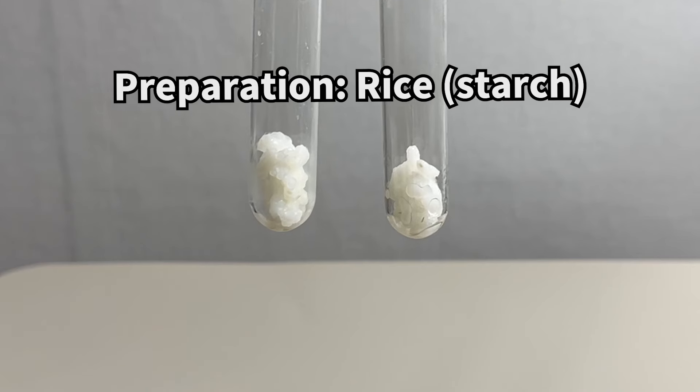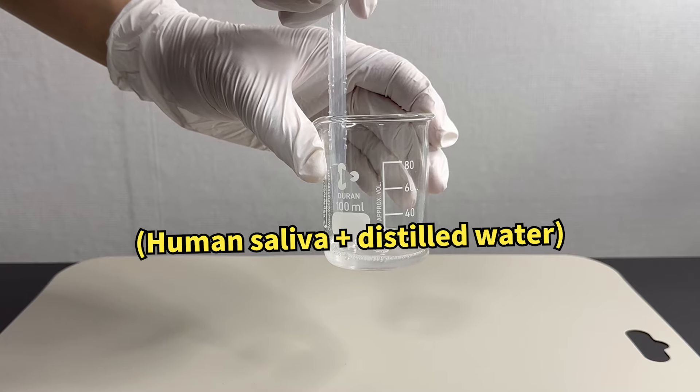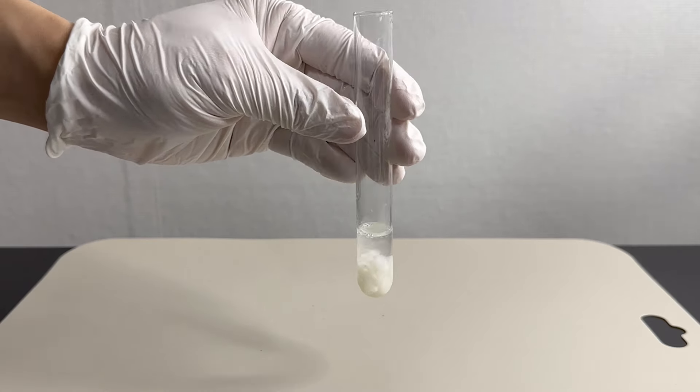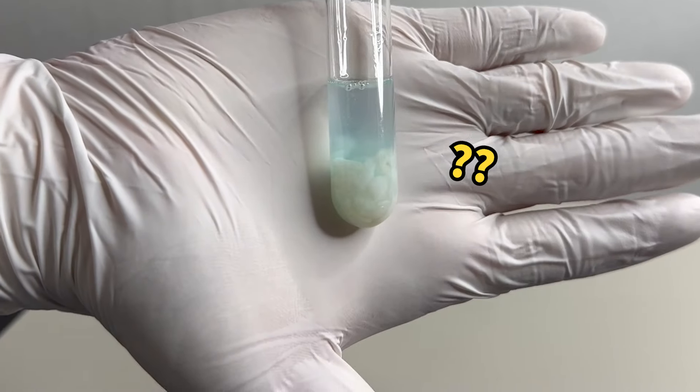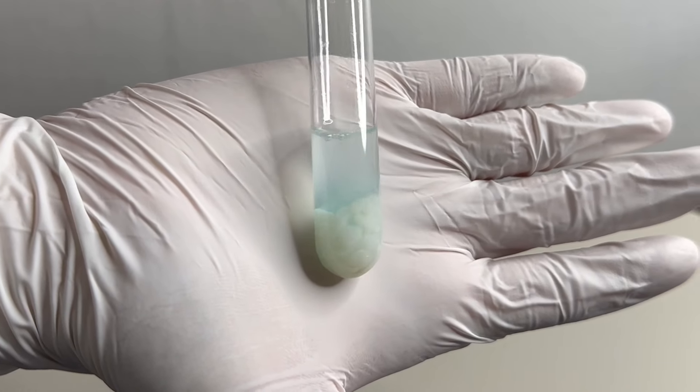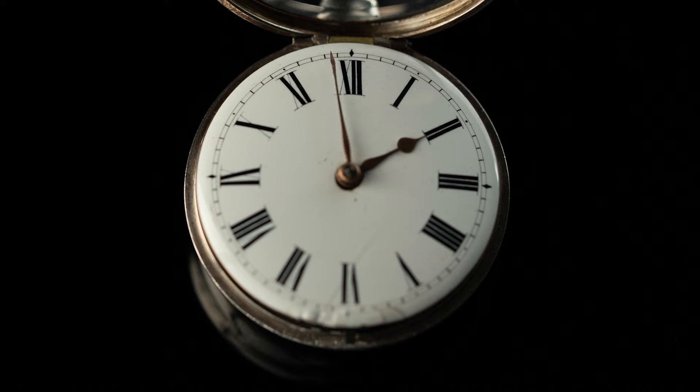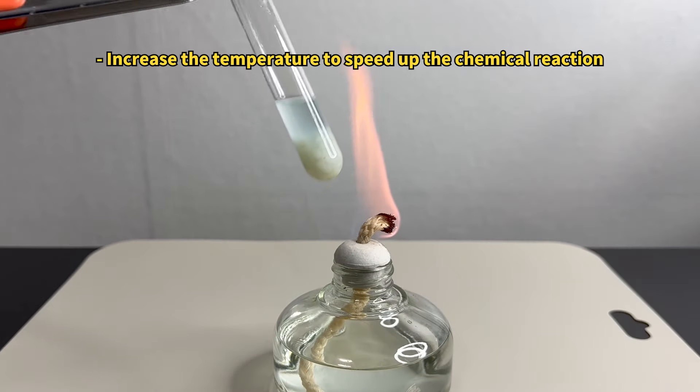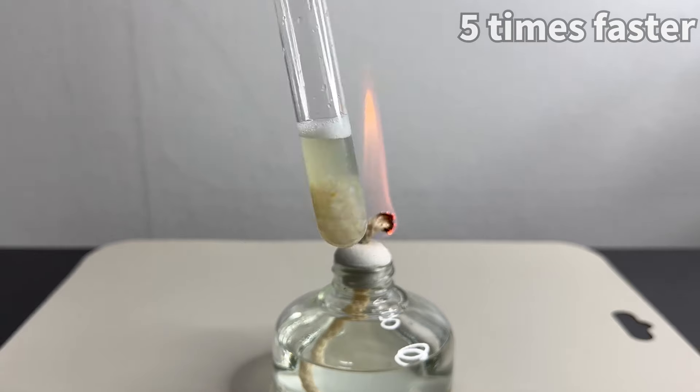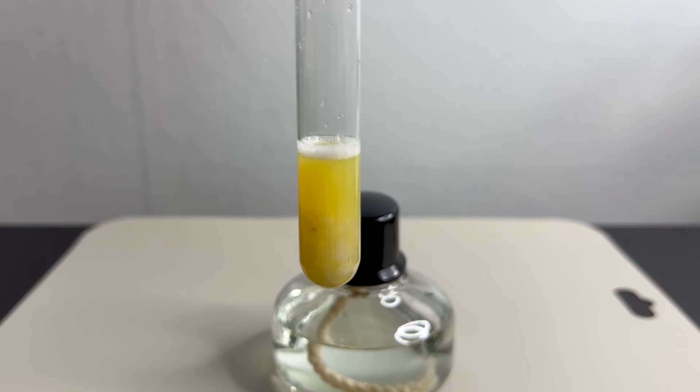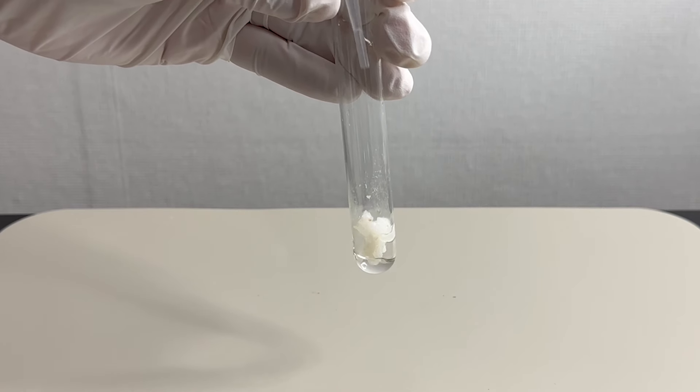We first tested human saliva by mixing it with a starch-coated rice grain and adding Benedict's reagent. Initially, there was no change. Because Benedict's reagent reacts slowly with sugars, we heated it with an alcohol lamp to speed up the reaction. Upon heating, the blue reagent turned yellow, indicating that the starch had been broken down.